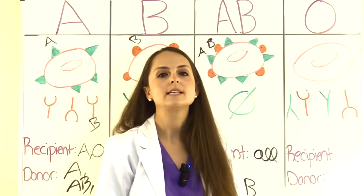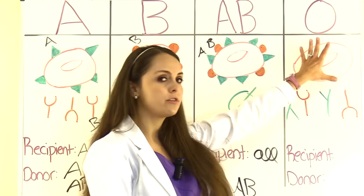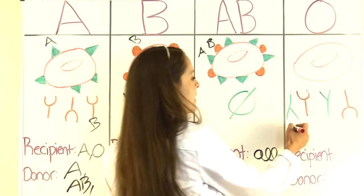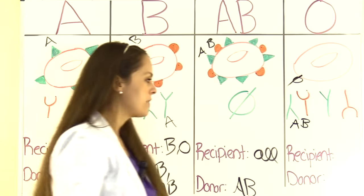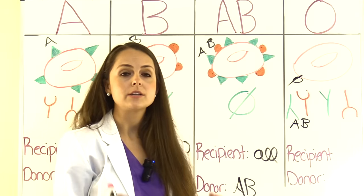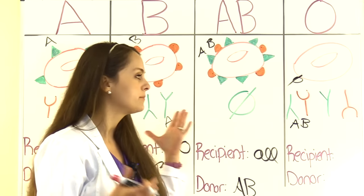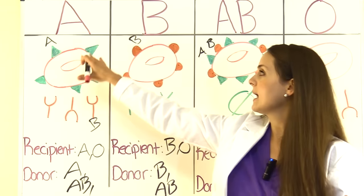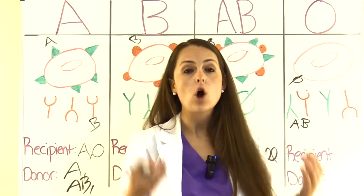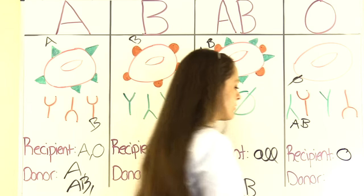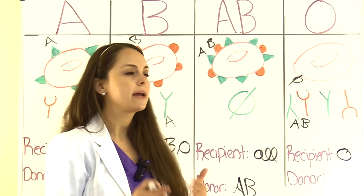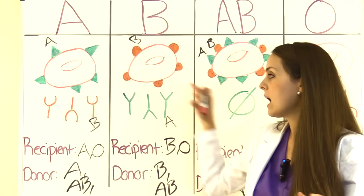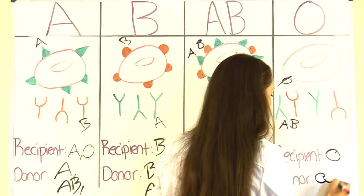Type O has no antigens on their surface, making them the universal donor. However, in their plasma they have both A and B antibodies. This creates a dilemma as a recipient — because they have both A and B antibodies, they can only receive blood from other type O's, since all other types carry either A or B antigens. As a donor they can give to everyone, because their lack of surface antigens won't cause an immune response in any blood type.